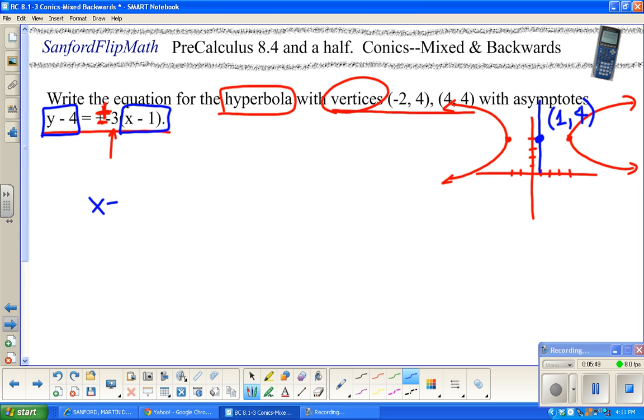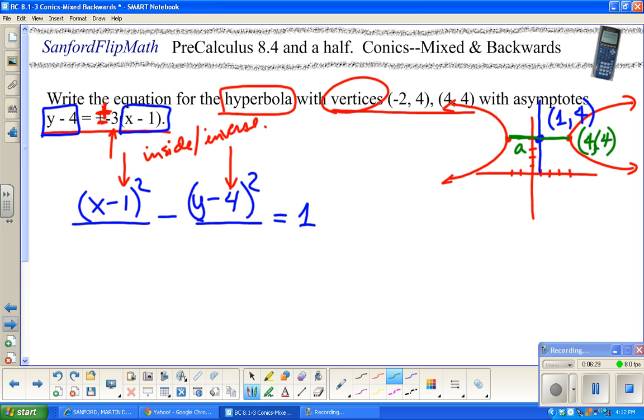The center will have to be halfway between there, which puts us at 1 and 4. Quick little check: notice how this says x minus 1 and y minus 4, is that consistent with the 1 and 4? I think it is. Since it opens left and right, I can do x minus 1 squared over something, minus y minus 4 squared over something equals 1. Remember for an ellipse and a hyperbola it's always equal to 1.